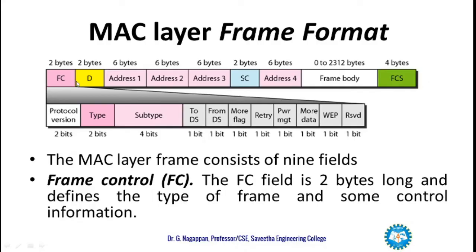The MAC layer frame starts with the frame control field, which is 2 bytes long and defines the type of frame and some control information. This 2-byte field is split into several subfields, and we will look at all of these as well as the overall frame structure.